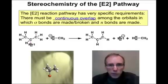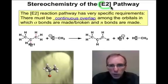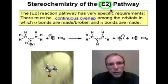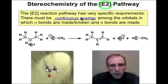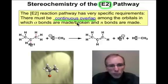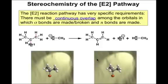The SN2 pathway is a concerted one-step substitution pathway and we saw that it was stereospecific. The E2 pathway is a one-step concerted elimination pathway, and we're going to see here that it's also a stereospecific reaction. Since bonds are simultaneously being made and broken, there's a need for continuous overlap of the orbitals involved. We'll see continuous overlap in the movies in just a minute, but first let's take a look at the chemistry that's happening here.